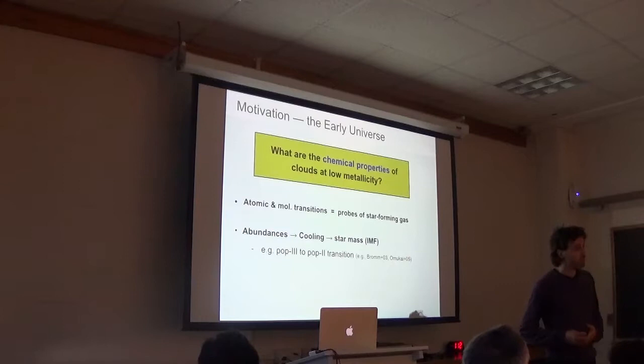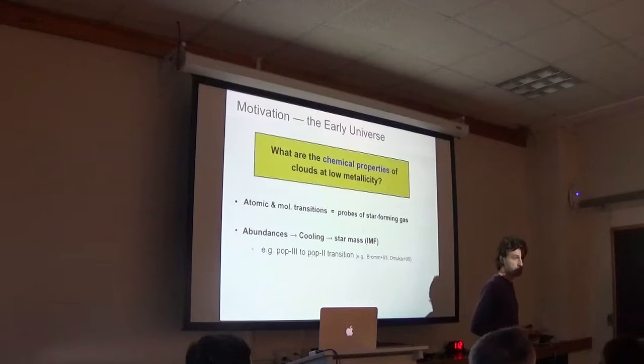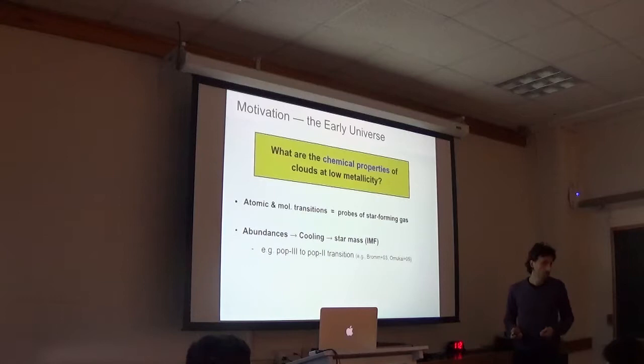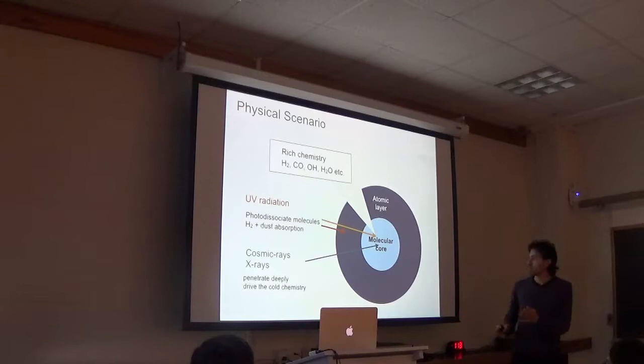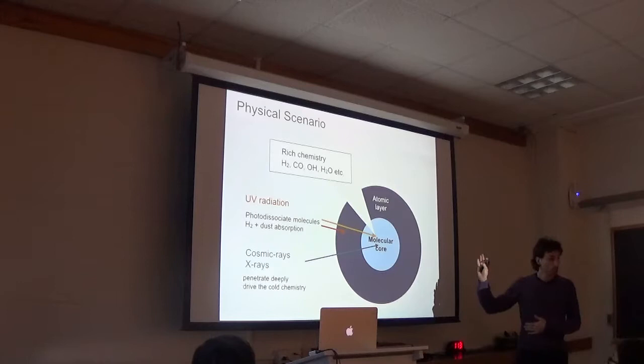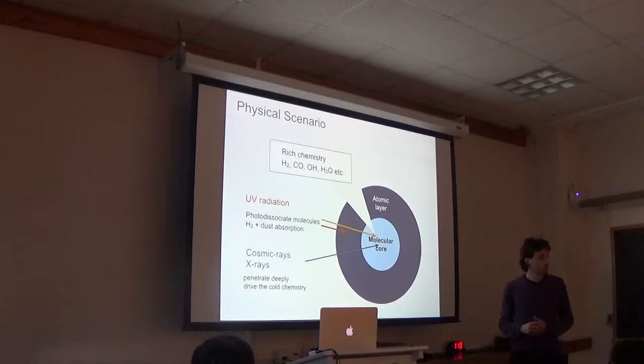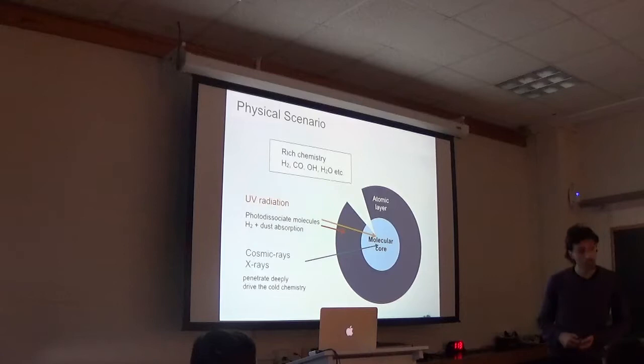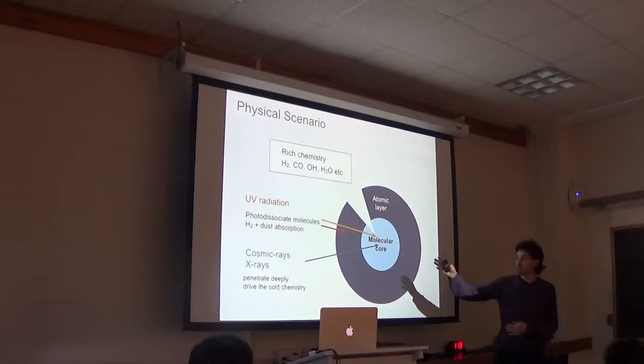And I think the chemical properties are especially important because, well, first from observational point of view, that's how we observe things. We use these transitions and we deduce temperatures, densities, and mass. For example, in our galaxy and the local galaxies, CO is always used to deduce the molecular gas of clouds. CO, is it still good at low metallicity? We don't know. Spoiler, no.